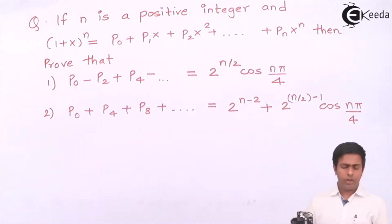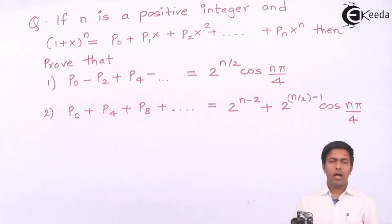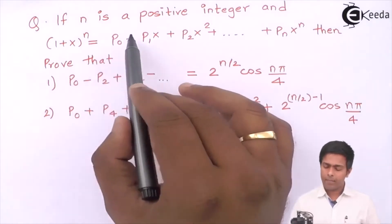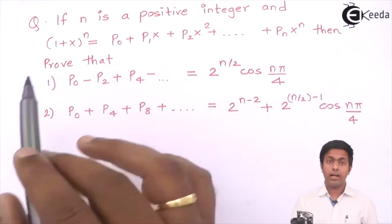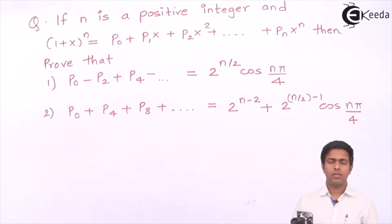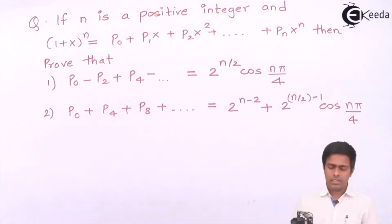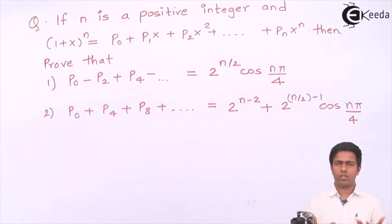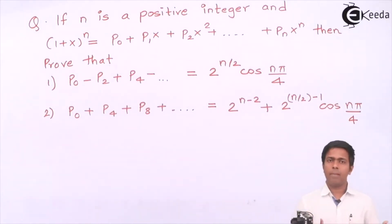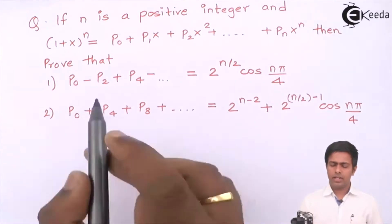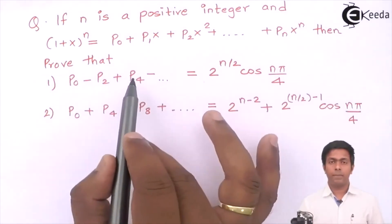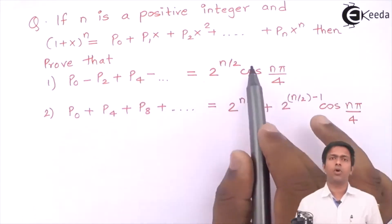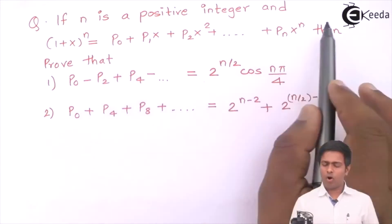If we put some value of x such that the left-hand side becomes a complex number, and we convert it into polar form, then we'll get sine and cosine terms where cosine is the real part and sine is the imaginary part. So the real terms of this series must equal the real part of this complex number. If we want the real terms to be p0, p2, p4, then we should put x = i.